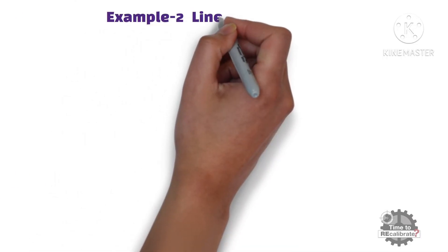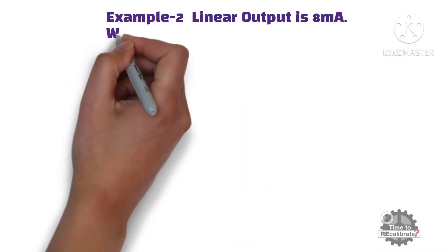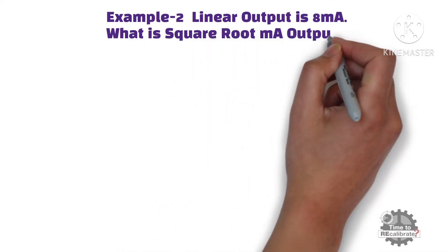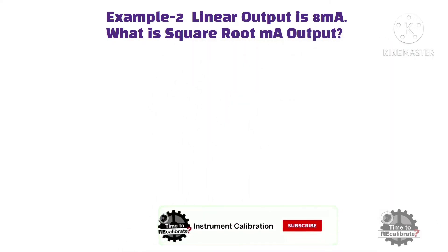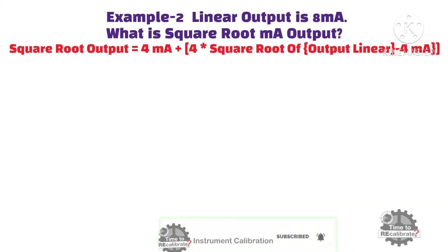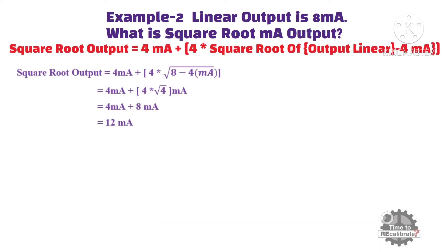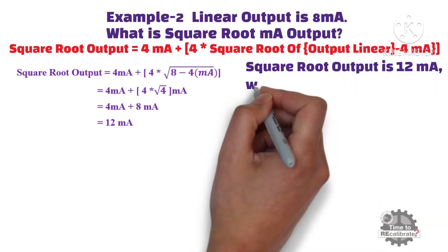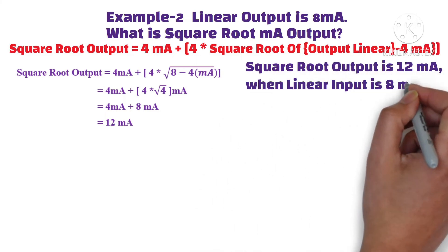Let's take a second example. If the linear output is 8 milliampere, what is the square root milliampere output for this input? Put 8 milliampere into the equation and do the simple math calculation. It will give you 12 milliampere. In other words, the square root output is 12 milliampere when the linear input is 8 milliampere.